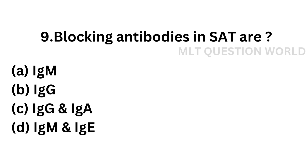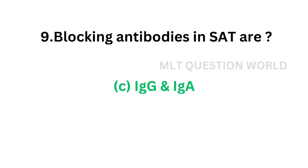Question 9. Blocking antibodies in standard agglutination test are: Option A, IgM; Option B, IgG; Option C, IgG and IgA; Option D, IgM and IgE. The correct answer is Option C, IgG and IgA.